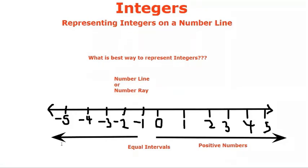Since the negative numbers and the positive numbers go on forever, we mark arrows at the ends of the number line.